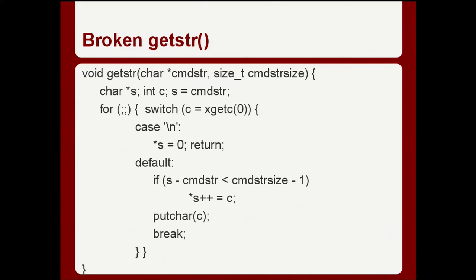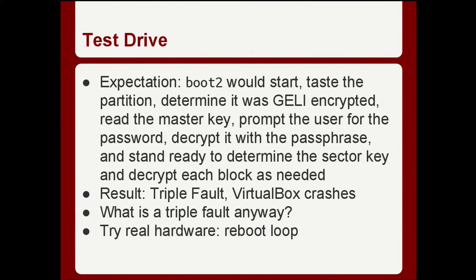There's a bug in the getstr-type functions: ngets and similar functions take input from the console up to a maximum size — but after the character limit is exceeded, it continues to echo characters to the screen anyway, so the user doesn't realize their extra characters aren't being saved. This bug exists in six or eight similar copies of these functions across the FreeBSD boot loader. That was caught by Jin Lee during the security team review of the GELI boot code.